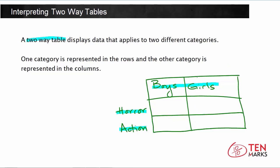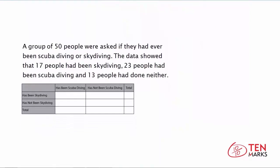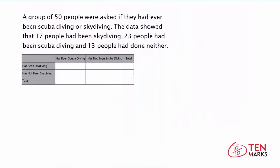Now let's try a word problem together. A group of 50 people were asked if they had ever been scuba diving or skydiving. The data showed that 17 people had been skydiving, 23 people had been scuba diving, and 13 people had done neither. We want to begin filling in the two-way table below.